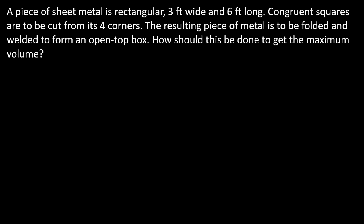So I'm just going to show you the problem. A piece of sheet metal is rectangular, three foot wide by six foot long, and congruent squares are to be cut from its four corners. The resulting piece of metal is to be folded and welded to form an open top box. How should this be done to get maximum volume? Okay, so the way that you want to work with optimization problems, in general, it's usually in your best interest to draw a picture first. So what I want you to do is test your own intuition here and draw this situation and label as much of the picture as possible. Hit play when you're ready.